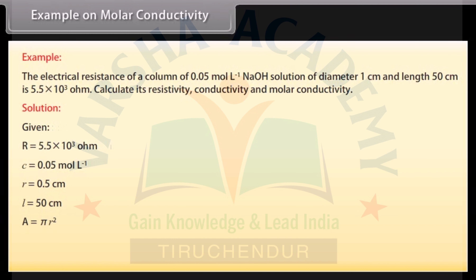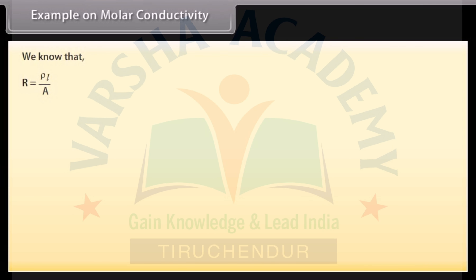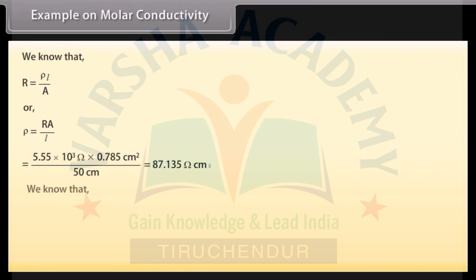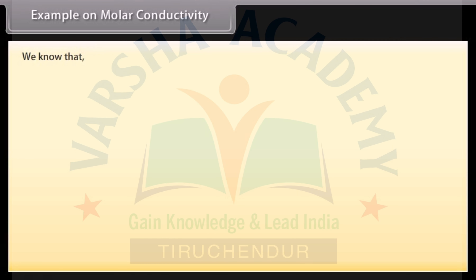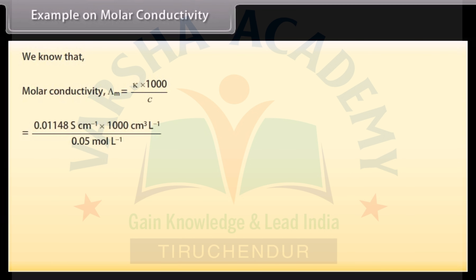Solution: Area = πr² = 0.785 cm². Using R = ρL/A, resistivity ρ = 87.135 Ω cm. Conductivity = reciprocal of resistivity = 0.01148 S cm⁻¹. Molar conductivity = κ × 1000 / C = 229.6 S cm² mol⁻¹.